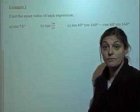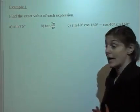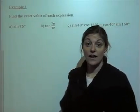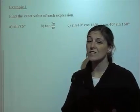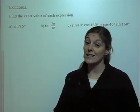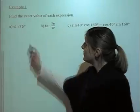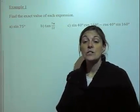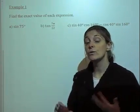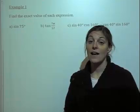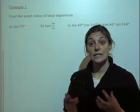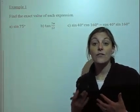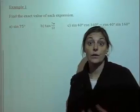Let's look at the first one, example A. We have sine of 75 degrees. Well, 75 degrees isn't on our unit circle, and we need to find the exact value. So what can we do to the 75 so that we can still represent 75 degrees but using values that are on the unit circle?